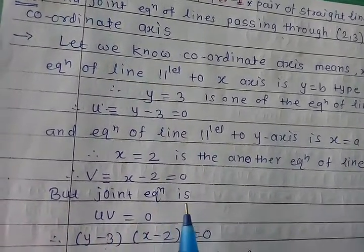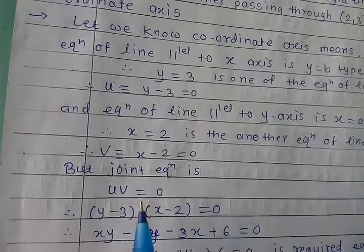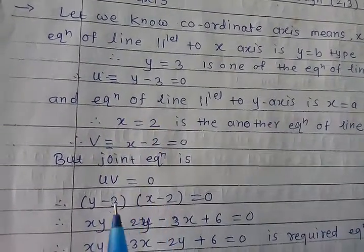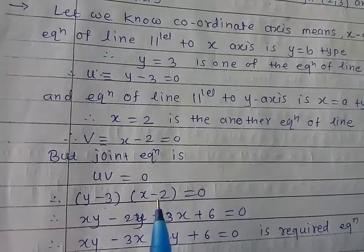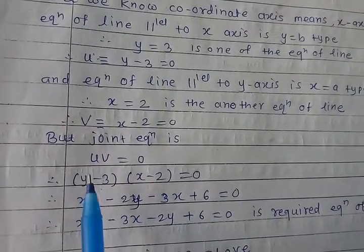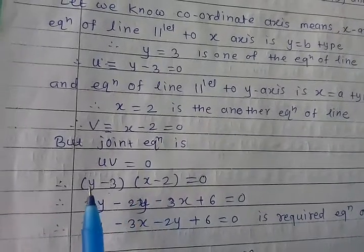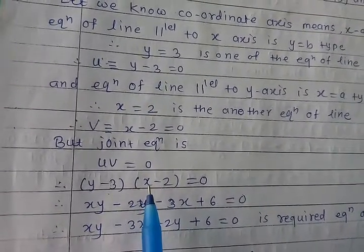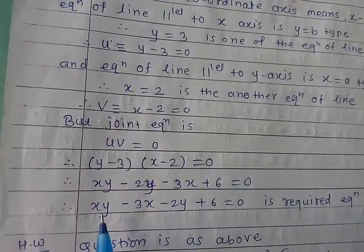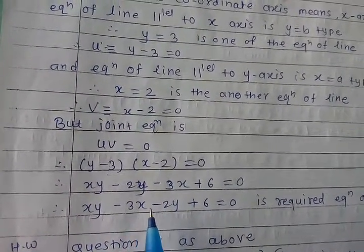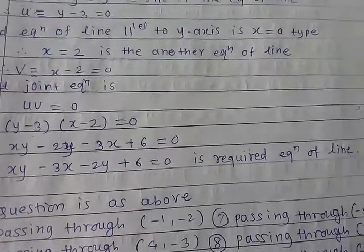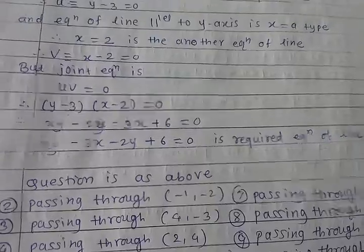The joint equation is uv = 0, so (y − 3)(x − 2) = 0. Multiplying the two brackets: xy minus 2y minus 3x plus 6, which gives the required equation: xy minus 3x minus 2y plus 6 equals 0.